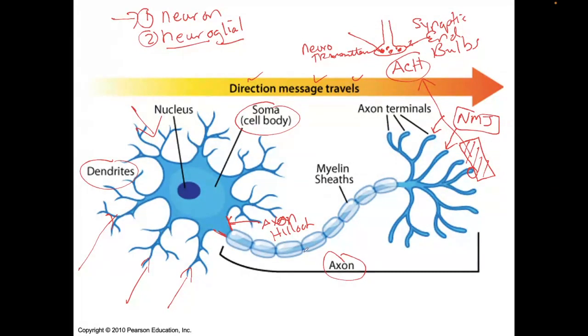Now, notice that the axon is covered by myelin sheath. There is a type of neuroglial cell that's called a Schwann cell. One of these is a Schwann cell, this is a Schwann cell, and this is a Schwann cell, and the Schwann cells produce myelin.